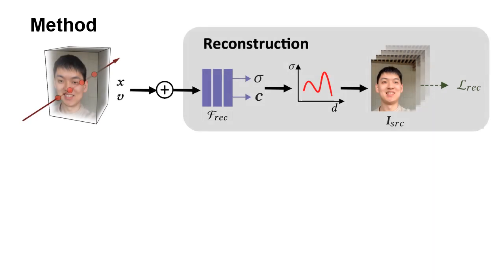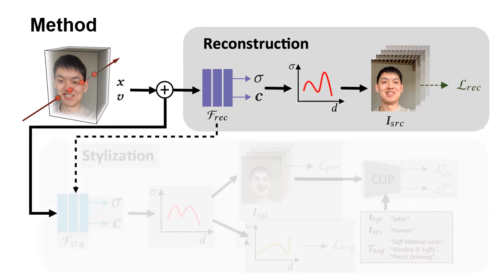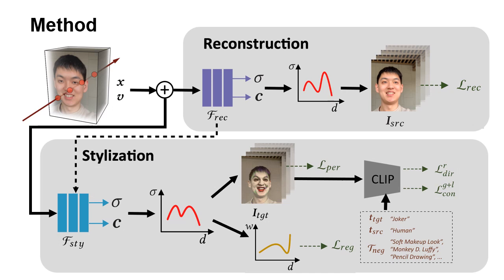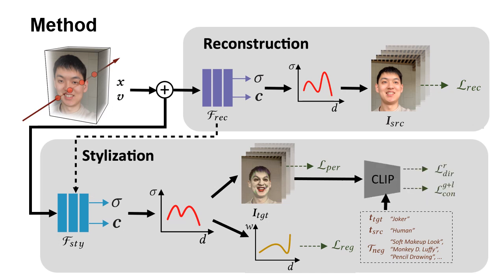In the reconstruction stage, our method first pre-trains the Nerf model of the target scene from multi-view input with reconstruction loss. In the stylization stage, our method stylizes the Nerf model guided by a text prompt, using a combination of relative directional loss and global-local contrastive loss in the CLIP embedding space, plus weight regularization loss and perceptual loss.